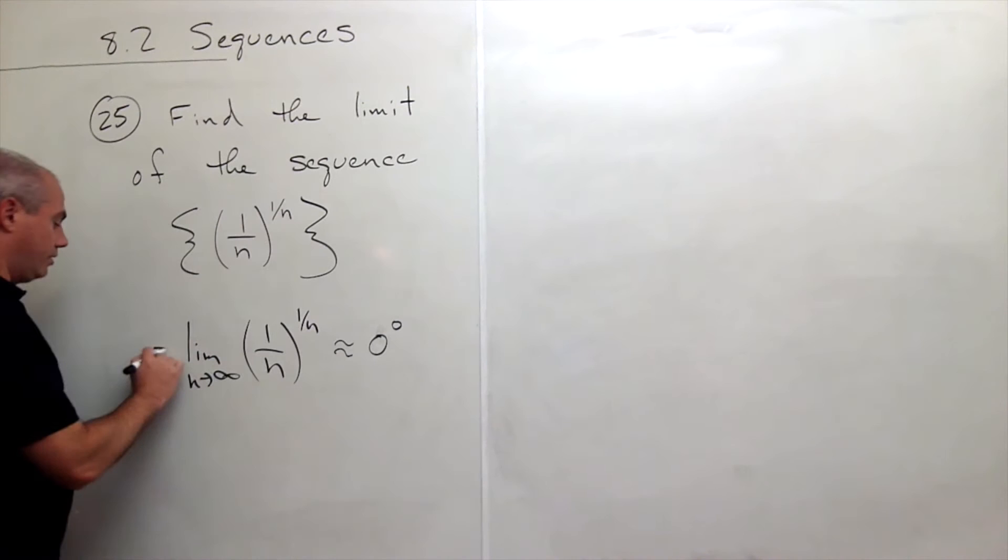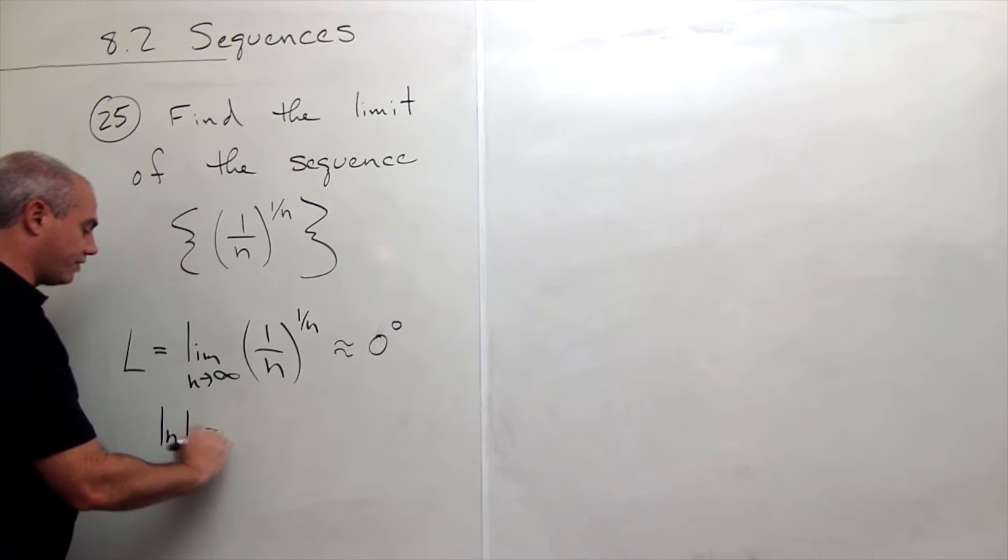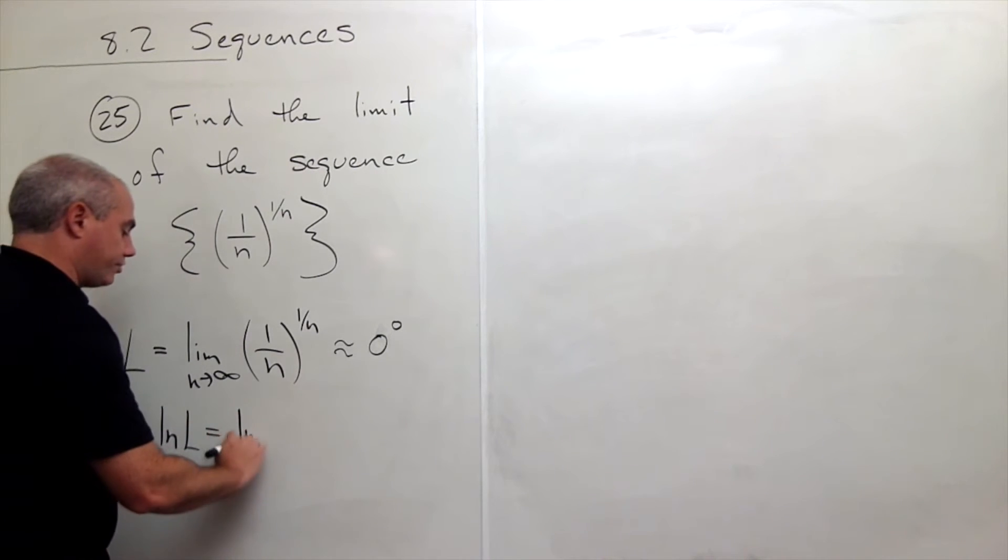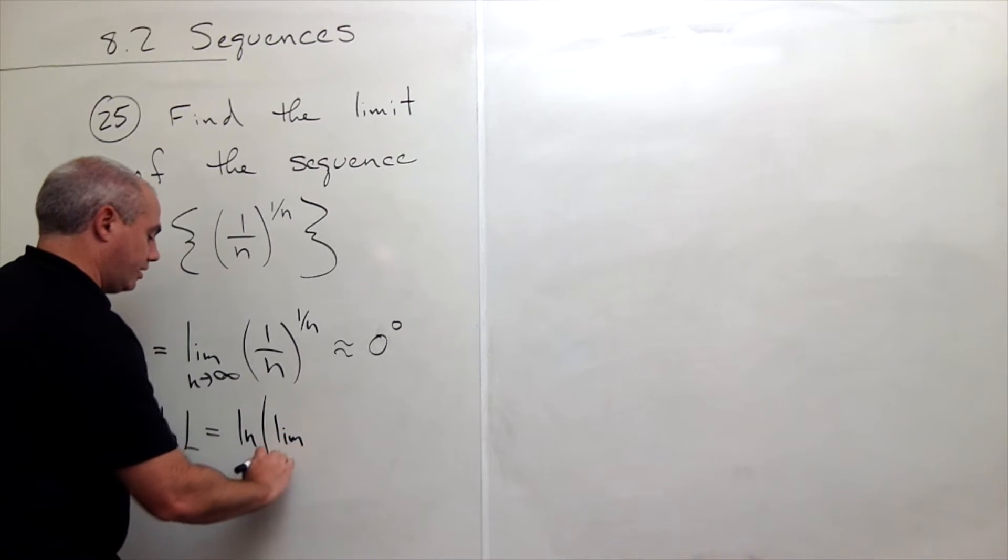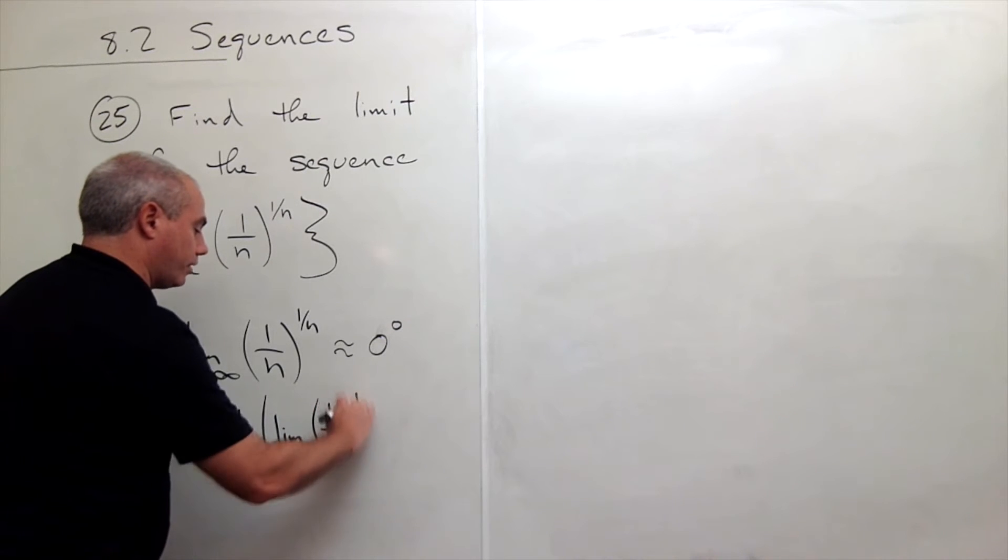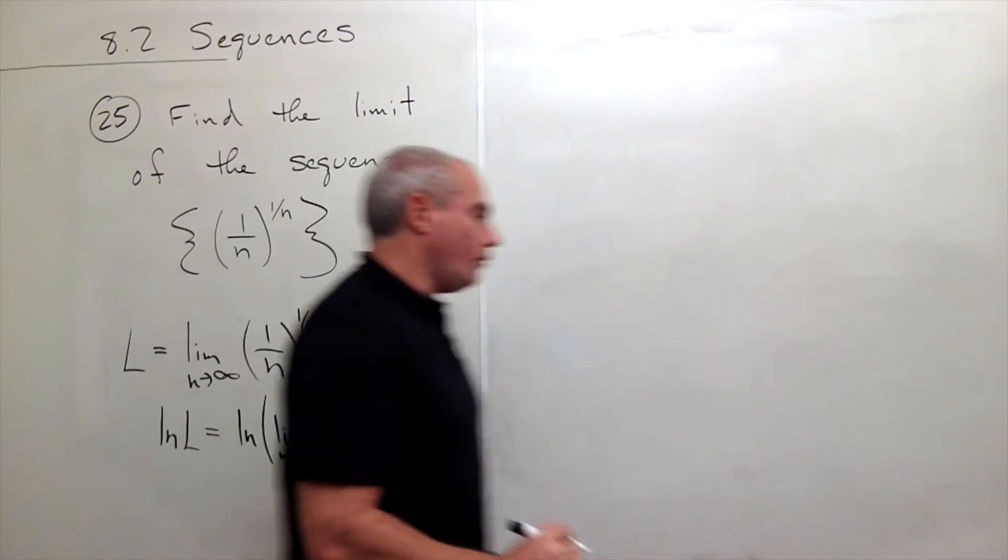I'm going to take this limit and I'm going to let it equal L, then I'm going to take the natural log of both sides of the equation. So I get that the natural log of L is the natural log of the limit as n goes to infinity of 1 over n raised to the power 1 over n.